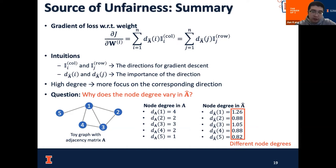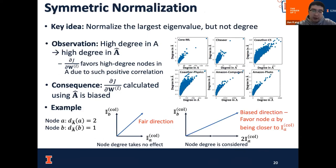We may wonder: since we have already done symmetric normalization on the graph to obtain the renormalized graph Laplacian, why does node degree still vary after normalization? In fact, this symmetric normalization normalizes the largest eigenvalue of the matrix rather than the degree of the nodes. In many real-world graphs, there is a clear positive correlation between node degree in the original graph and node degree in A-hat, meaning high-degree nodes in the original graph will likely have a high degree in the renormalized graph Laplacian as well. Thus the gradient is still biased with respect to node degree.